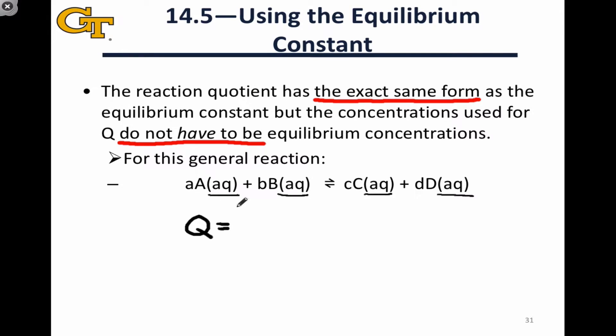We can write a general expression for Q. Q is equal to concentration of C raised to the power of its stoichiometric coefficient, a similar expression for D divided by the concentrations of the reactants raised to their respective coefficients, so the concentration of A raised to the little a power, and the concentration of B raised to the little b power.